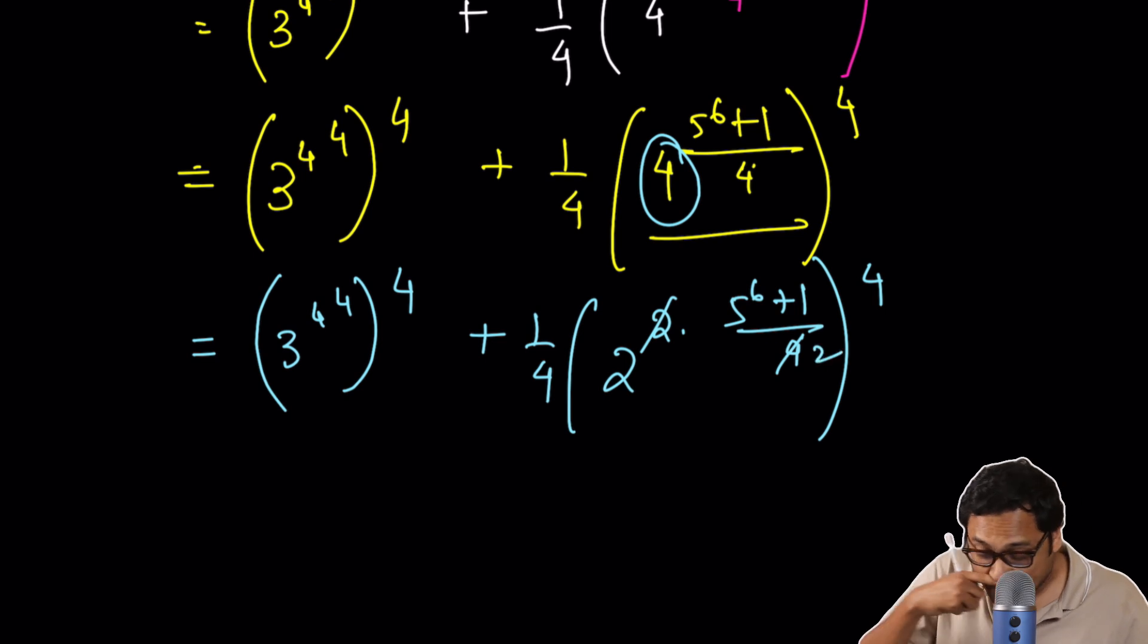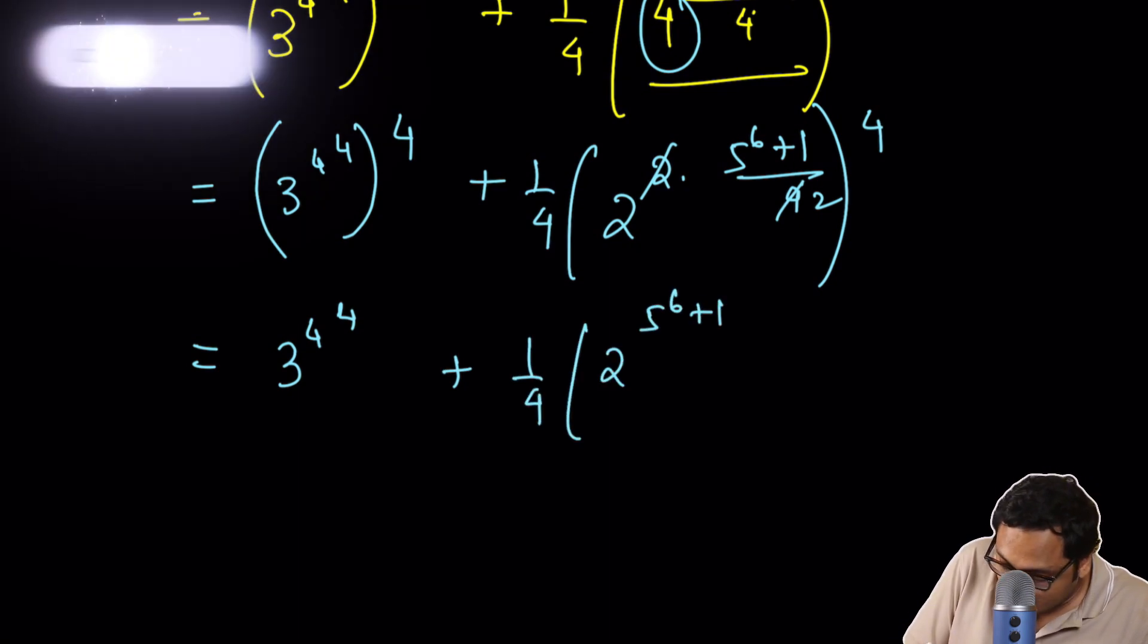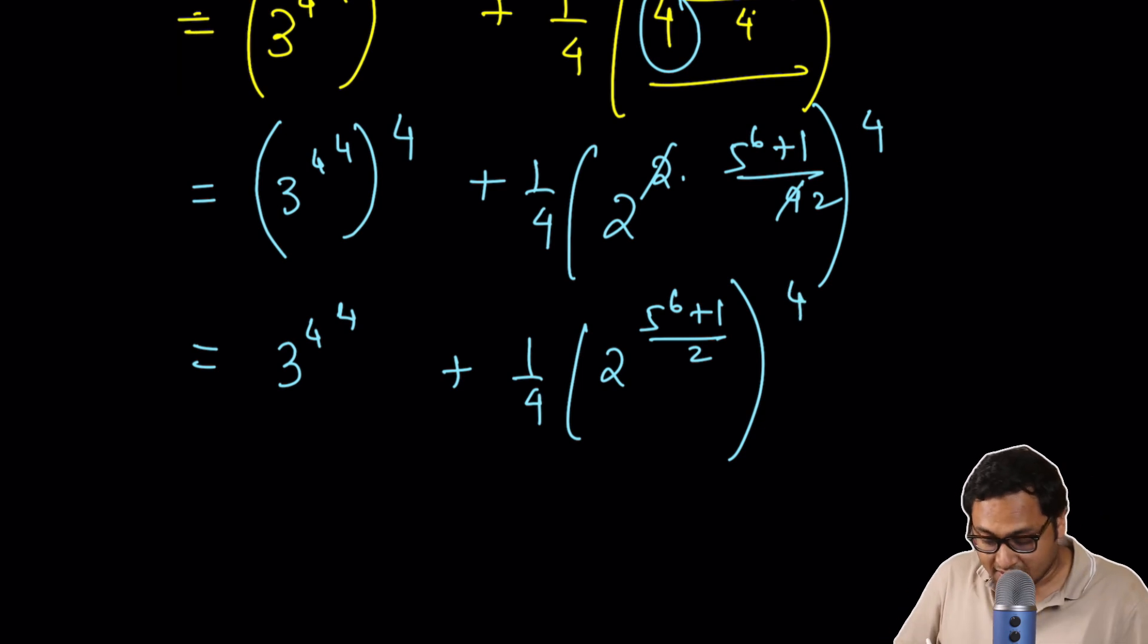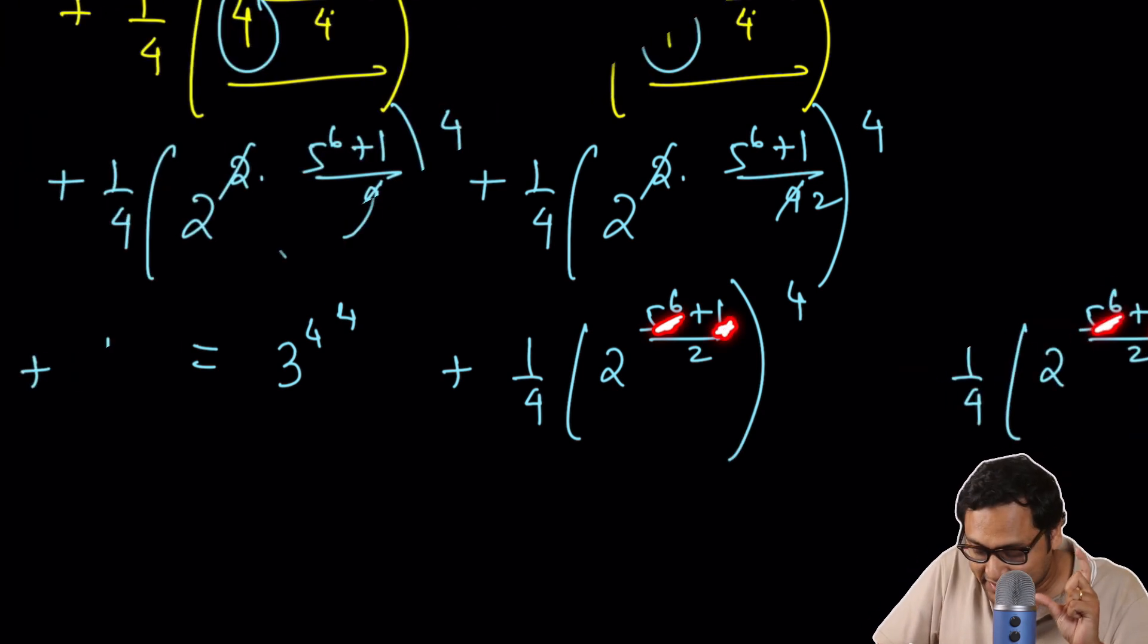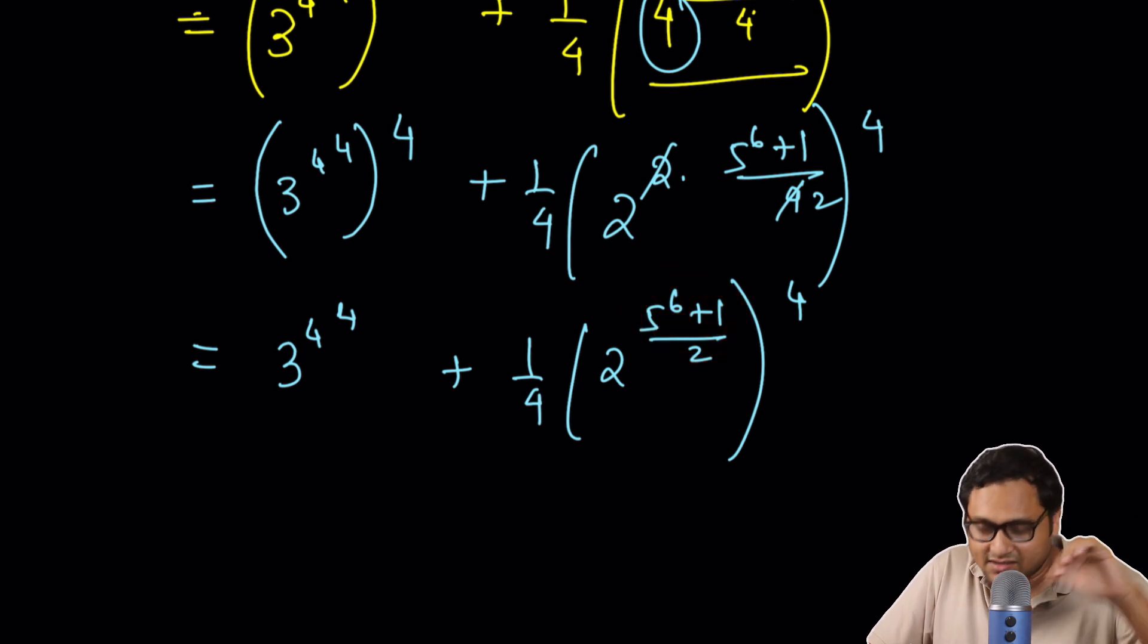So 4 you can write as 2 square. 5 to the power 6 plus 1 by 4 raised to the power 4. Now 2, 2 cancels. So your final expression is 3 to the power 4 to the power 4 plus 1 fourth of 2 to the power 5 to the power 6 plus 1 by 2 raised to the power 4.